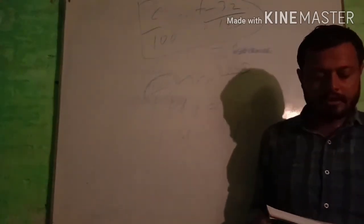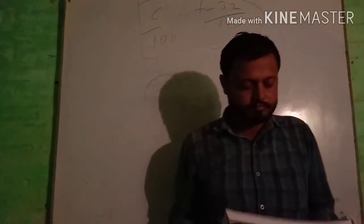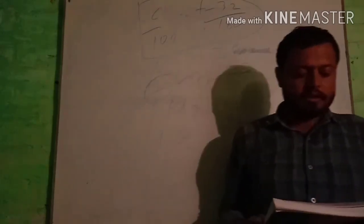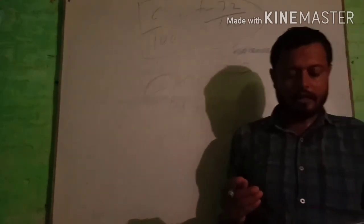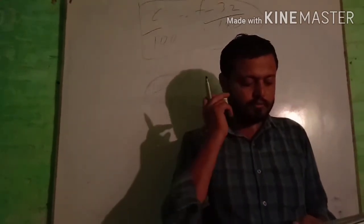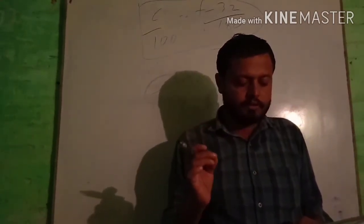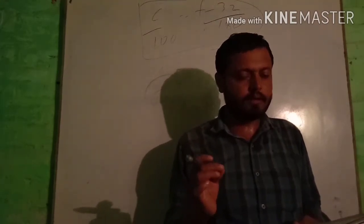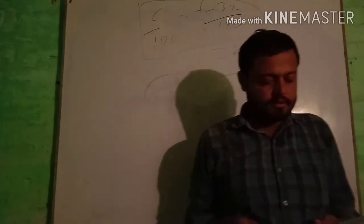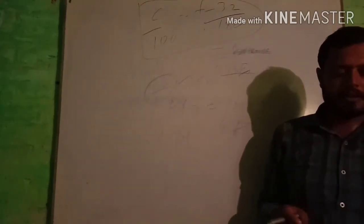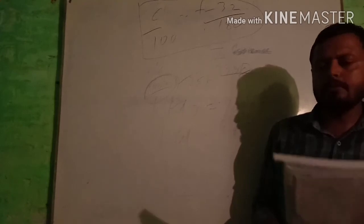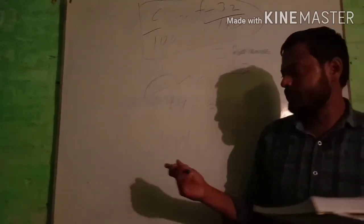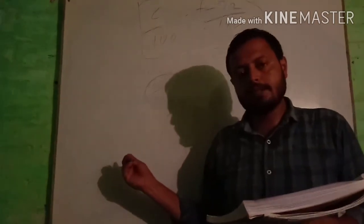How to use a clinical thermometer: Wash the thermometer before use, preferably with antiseptic solution, and dry it using a cotton swab. Hold the thermometer firmly and give it a few jerks to bring the level of mercury below 35 degree Celsius. यह clinical thermometer का usage है - किसी भी body का temperature thermometer के द्वारा measure करते हैं.